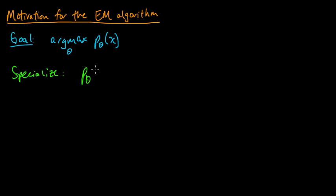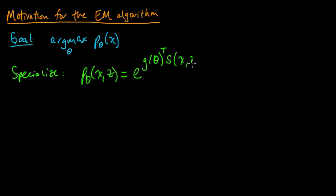In general, an exponential family takes the following form, and we're going to think about an exponential family for X and Z. The general form is E to the G of theta — for some vector-valued function G of the parameter theta — inner product with some vector-valued function S of X and Z, times H of X and Z, divided by a normalizing constant C of theta, the partition function.